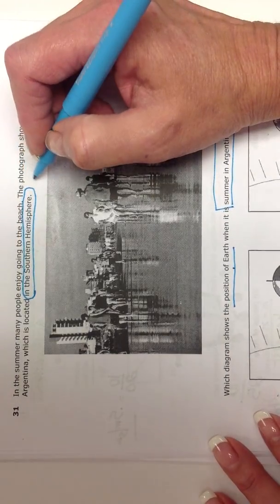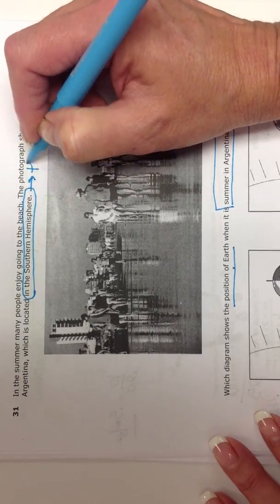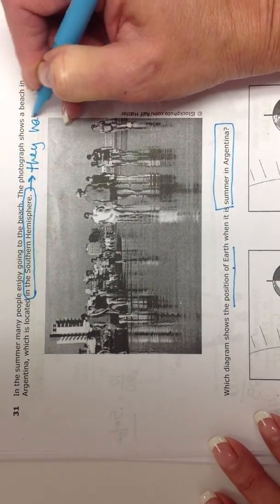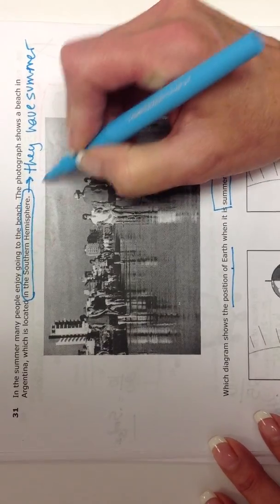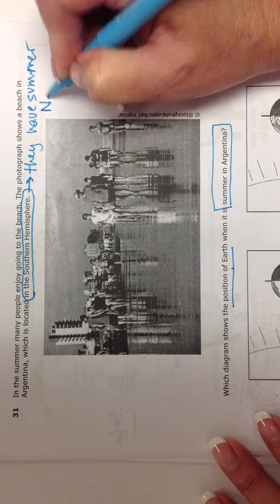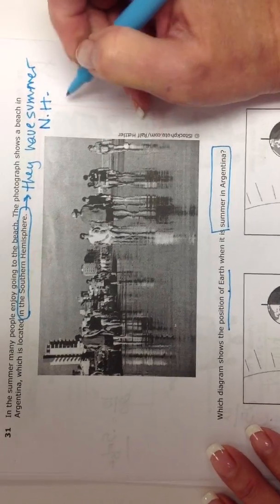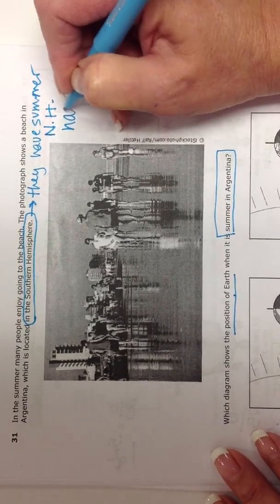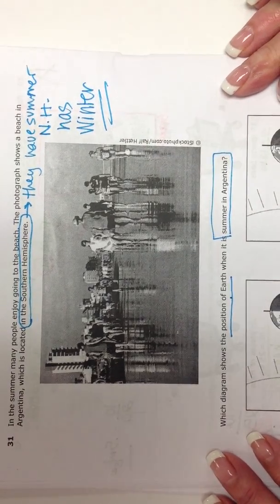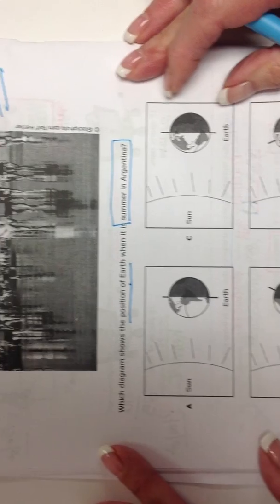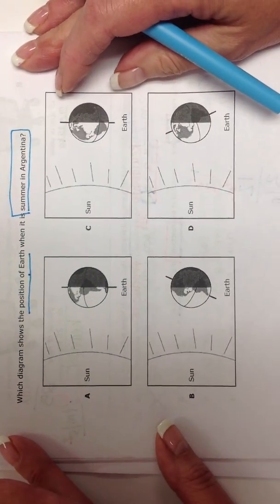So when they have summer, what do we have in the northern hemisphere? Northern hemisphere has winter. So we're looking for a diagram that shows the northern hemisphere having winter. So let's look.